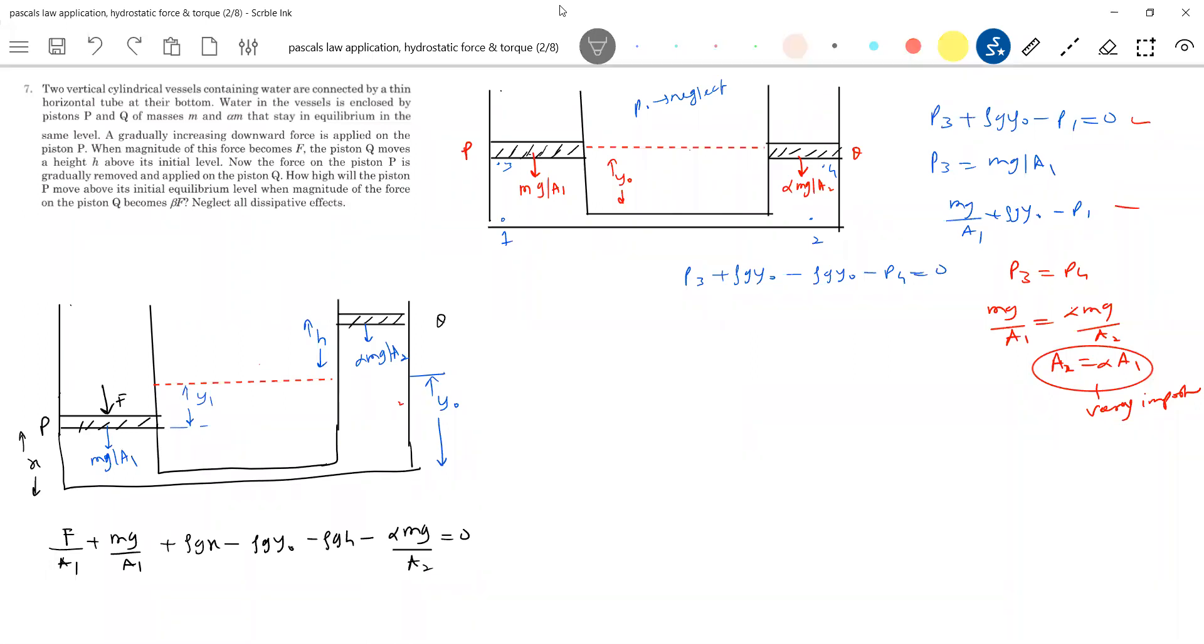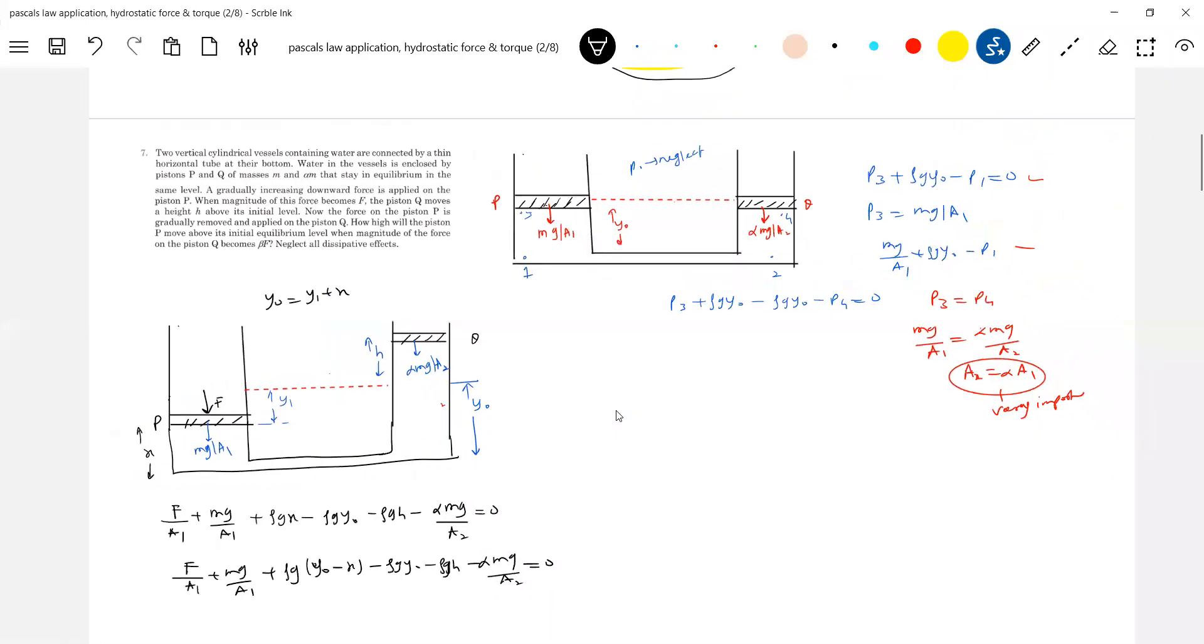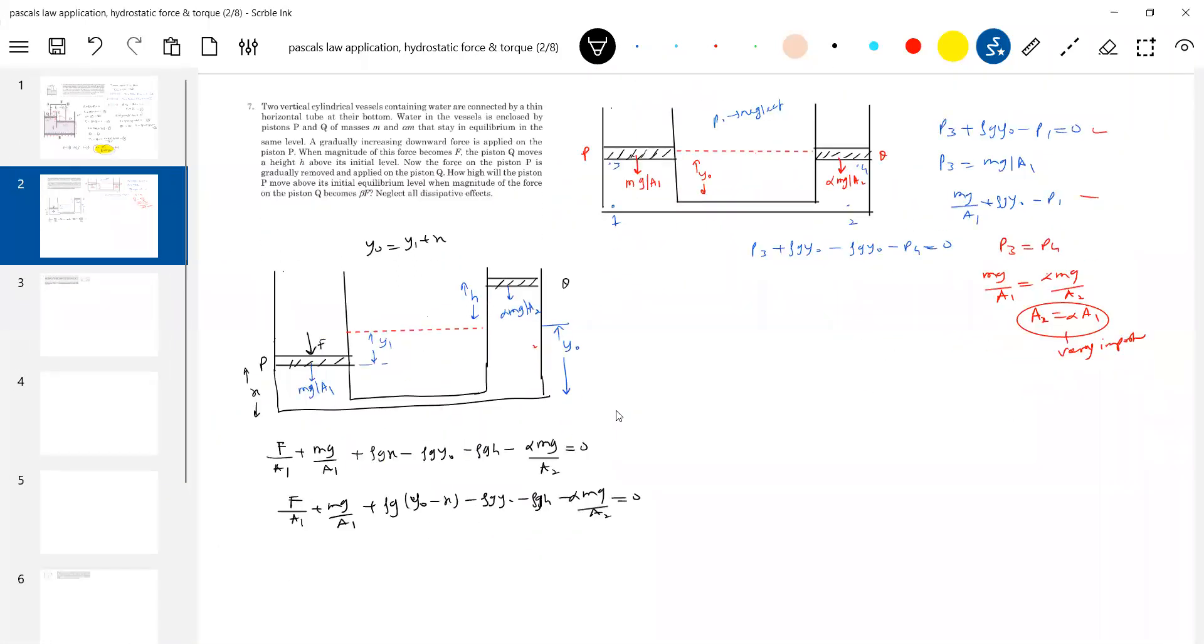What is Y naught you can write it as? What is X you can write it as? Because X is unknown thing what we have introduced. So Y naught shall we write Y1 plus X. So X is equal to Y naught minus Y1. So Y naught here is equal to Y1 plus X. So X what you can write, Y naught minus Y1. So writing this equation, F by A1, Mg by A1, Rho G Y naught minus X, Rho G Y naught minus X Y naught. I am just trying to develop a manometric equation. That's all. A student should be able to write manometric equation.